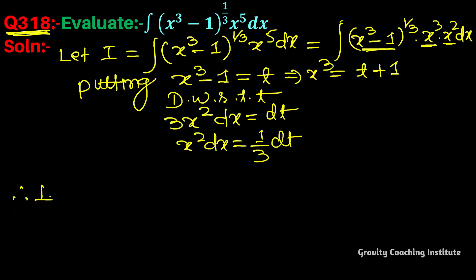Therefore I = ∫t^(1/3) * (t+1) * (1/3)dt, where we put x³-1 = t, x³ = t+1, and x² dx = (1/3)dt.